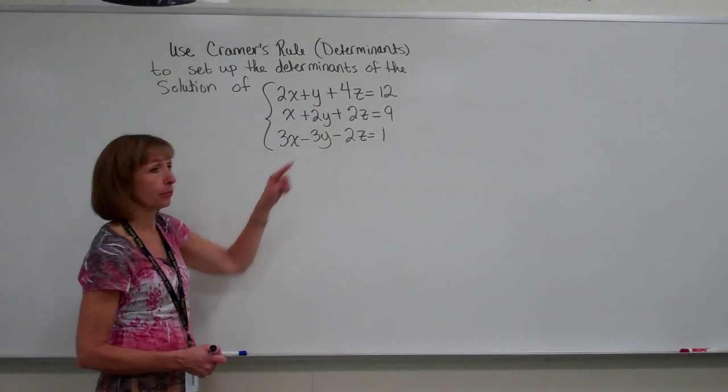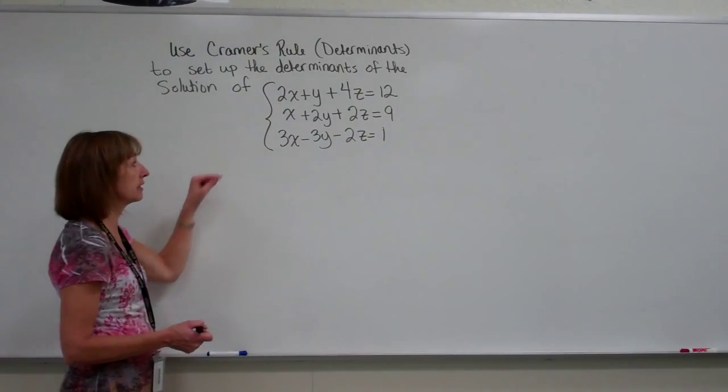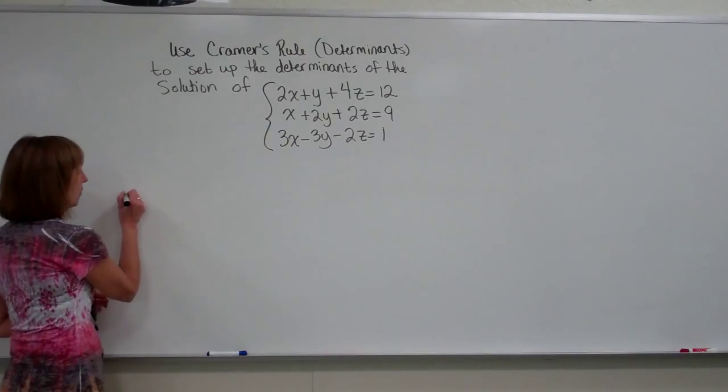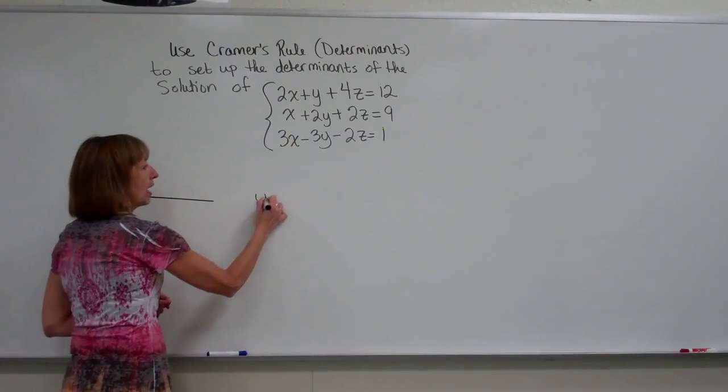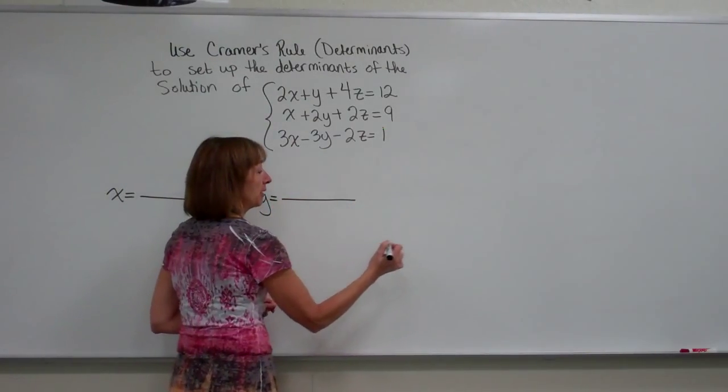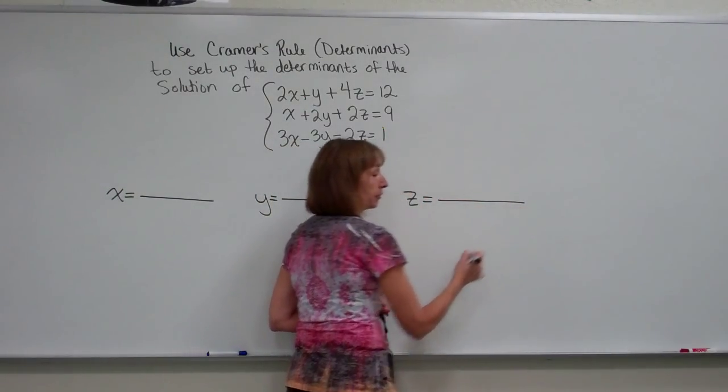Here I have three different letters that I'm trying to find the values for that would be the solution to this system. So we have x equal to a quotient, y equal to a quotient of two determinants, and z equal to a quotient of two determinants.